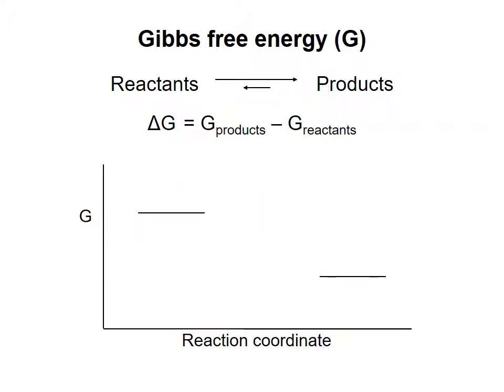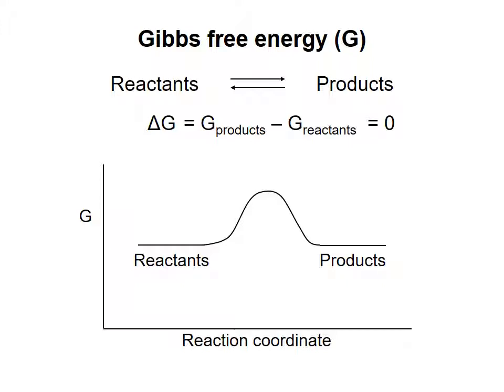As the reaction proceeds and reactants are converted to products, the concentration of reactants will fall, and the concentration of products will rise. Because Gibbs free energy depends on concentration, as the reaction proceeds, the Gibbs free energy of the reactants will fall, and that of the products will rise. At some point, the Gibbs free energies on both sides of the equation will be equal, and delta G will equal zero. At this point, the reaction is said to be at equilibrium. The forward and backward reactions continue to happen, but there is no net conversion of reactants to products, or of products to reactants.